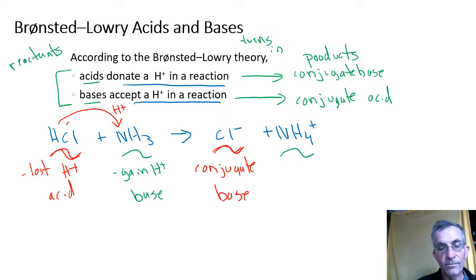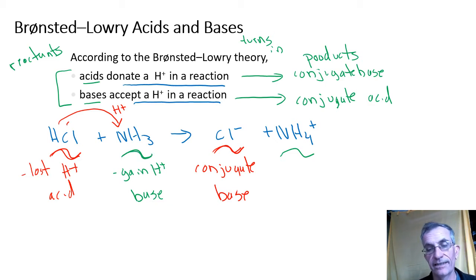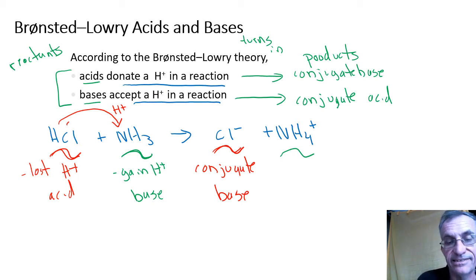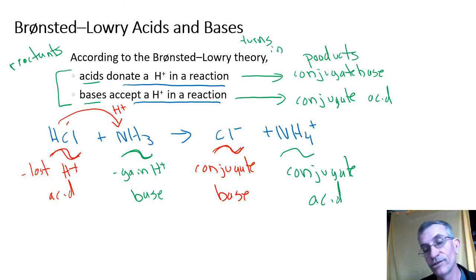NH3 was the base, and when it gained that hydrogen it turned into NH4⁺, which is the conjugate acid. In this video we're going to practice identifying which one is the acid, which is the base, which is the conjugate acid, and which is the conjugate base.